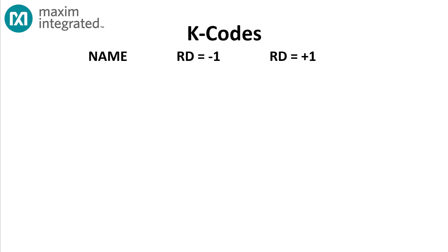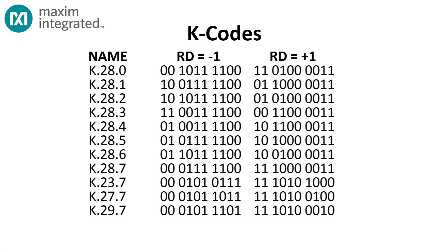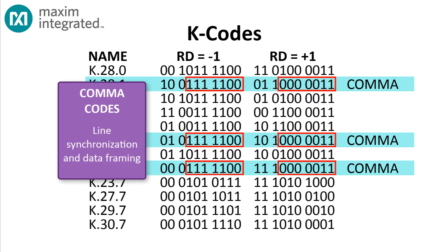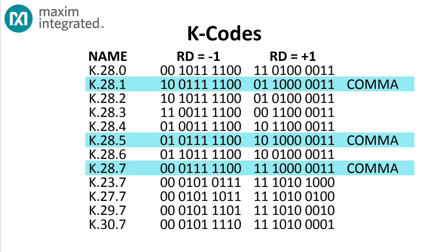There are 12 codes called k-codes that can be used for signaling. Three of those codes are called comma codes, and they contain a unique pattern that doesn't appear in any other 10-bit code. Thus, these codes can be used for line synchronization, and that's a necessity, because the 10-bit symbols are sent one after another without framing. Before data can be accurately interpreted in the receiver, the receiver must align on a series of synchronization symbols sent by the transmitter, and then depend on the clock edges to keep its clock synchronized with the transmitter clock.